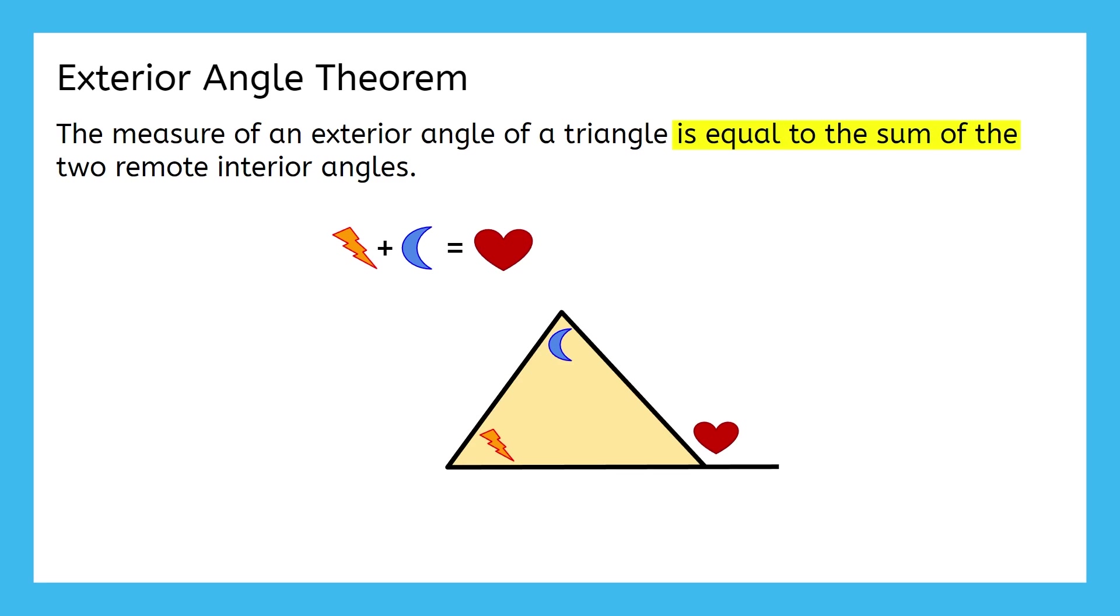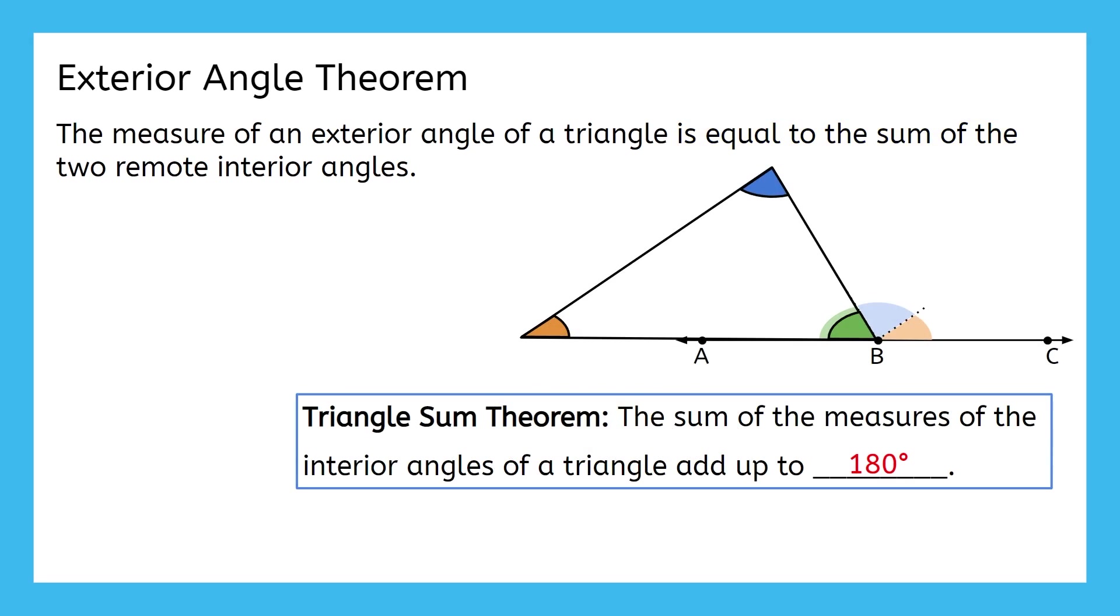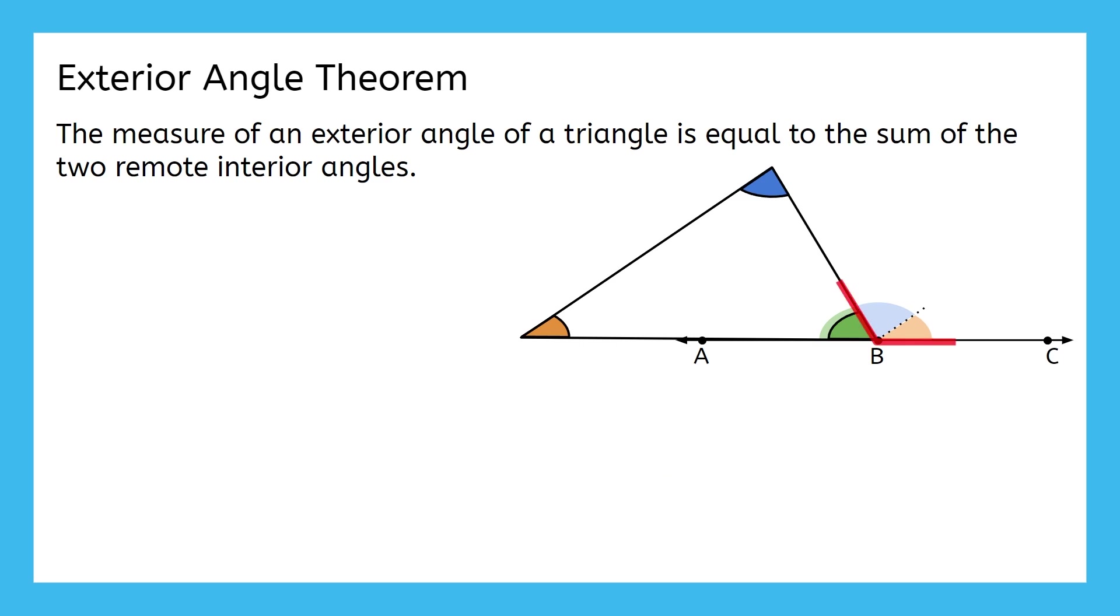And here's a cool connection to a previous topic. Do you remember this activity from a few lessons back? We tore the two Remote Interior Angles off the triangle to paste them here. This showed us that the three angles in the triangle added up to equal 180 degrees because they formed a straight line. That's exactly what the Exterior Angle Theorem is talking about. This Exterior Angle Measure equals these Remote Interior Angle Measures added together.